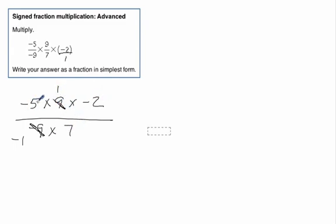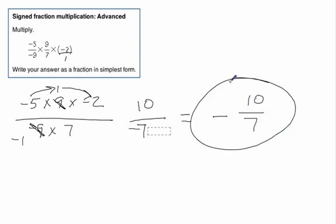No other cross canceling. So negative 5 times 1 is negative 5. Negative 5 times negative 2 is positive 10. And negative 1 times 7 is negative 7. So we'd write the best way as negative 10 over 7. There you have it. Thank you.